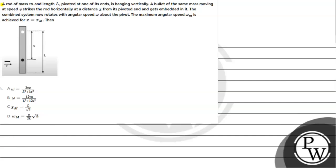Hello, let's read a given question. The question says a rod of mass M and length L pivoted at one of its ends is hanging vertically. A bullet of the same mass moving...